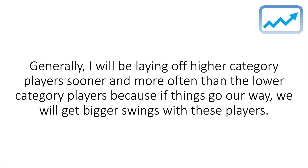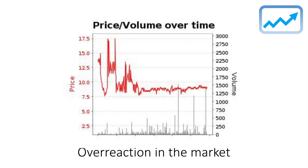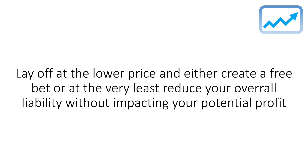Generally I'll be laying off higher-category players sooner and more often than lower-category players, because if things go our way we'll get those bigger swings with higher-category players. Another key element where you can make big profits is looking out for overreaction in the market. This is when the price of the player you're backing momentarily shortens beyond expectation. It generally happens when the player you're backing is the underdog in a match but wins the first set — the market overreacts and their price shortens even if they go on to lose. Lay off at that lower price to create a free bet or green book, or at the very least reduce your overall liability without impacting your potential profit much.